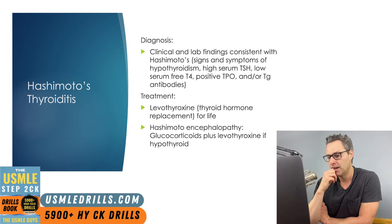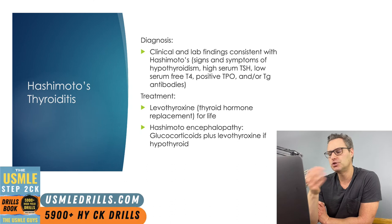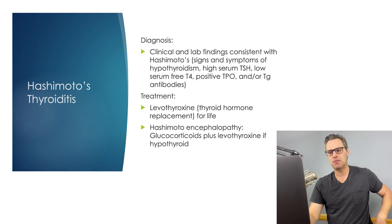Sometimes patients can have Hashimoto's encephalopathy without actually having hypothyroidism — something important to keep in mind. If a patient has Hashimoto's encephalopathy without hypothyroidism, you would just give glucocorticoids. But if they're also hypothyroid, we're going to titrate levothyroxine and give those glucocorticoids. Just a couple of caveats to keep in mind, but still pretty straightforward.